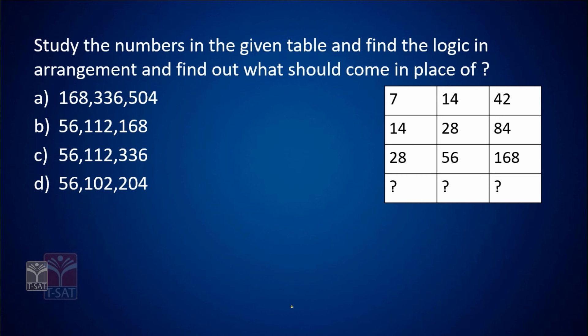Study the numbers in the given table: 7, 14, 42 / 14, 28, 84 / 28, 56, 168. The pattern is multiplying by 2 across the rows: 7×2=14, 14×2=28 for the first two columns, then 42×2=84, 84×2=168. So 28×2=56 and 56×2=112, and 168×2=336. The answer is option C.